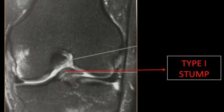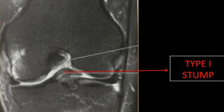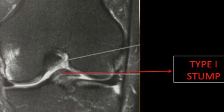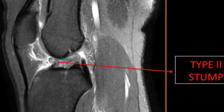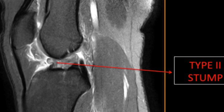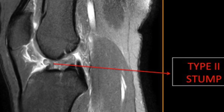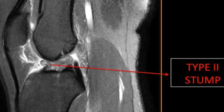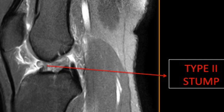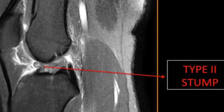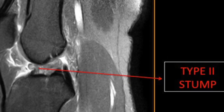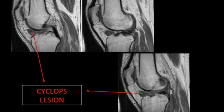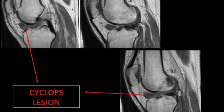ACL stumps are usually of two types. A type 1 stump is when the displaced ACL after tear falls as a nodular mass in the anterior aspect of the intercondylar notch. A type 2 ACL stump demonstrates a discrete, well-defined tongue-like extension of the stump associated with angulation. In type 2 stumps, the tear is more towards the femoral attachment, leading to a longer stump length that allows it to angulate and fall anteriorly. Type 1 stumps are often associated with fibrosis at the free end, creating a bulbous configuration susceptible to anterior recess entrapment, forming what is called the cyclops lesion.